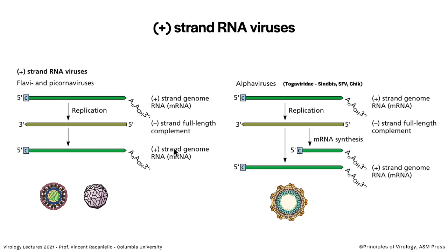Now let's talk about plus-stranded RNA viruses. The picornaviruses — typified by poliovirus — and also flaviviruses such as West Nile, dengue, and Zika have a plus-strand RNA genome that is a messenger RNA. It can be translated directly, or it's replicated through a minus-strand full-length complement to get more plus strands. This minus strand is thrown away — it's not used for anything except to make more plus strands.